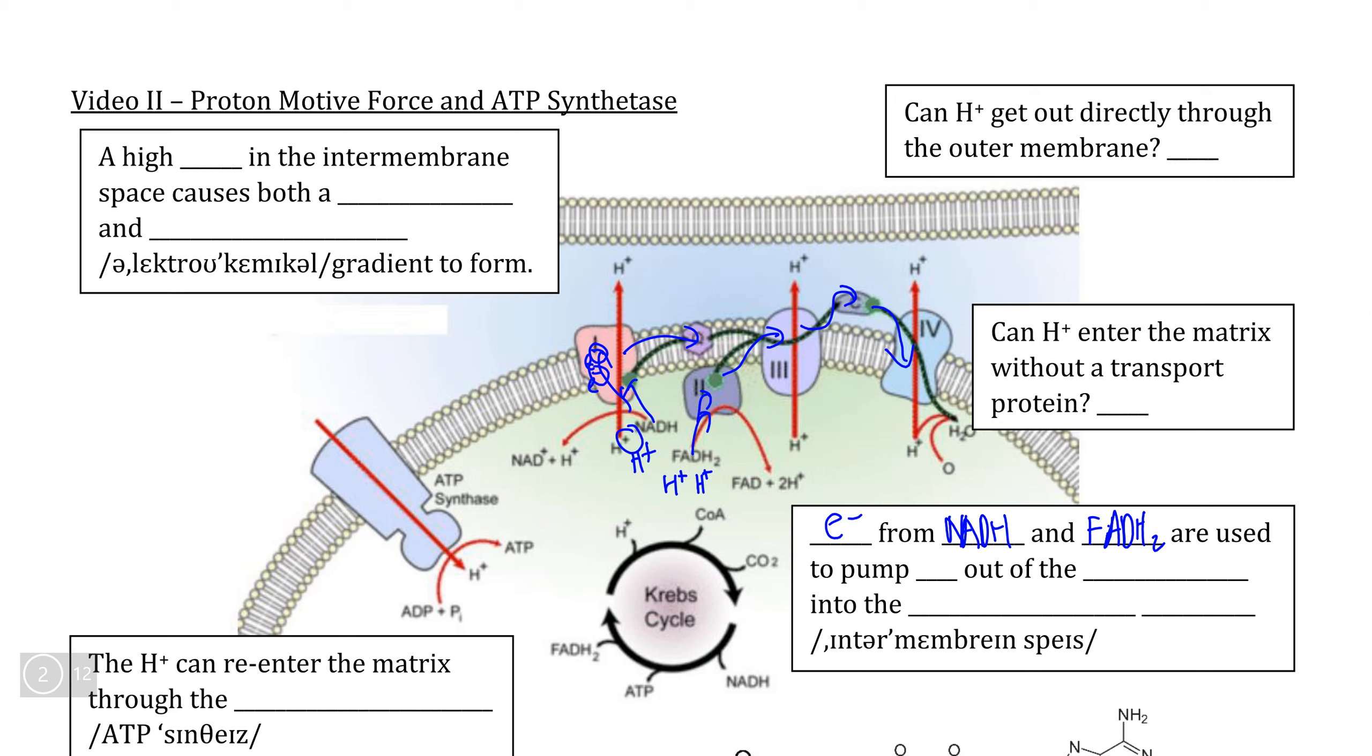This means that every time electrons move through one of the mitochondrial membrane complexes that also acts as a transport protein, the movement of electrons causes H plus ions to be pumped out of the mitochondrial matrix where the Krebs cycle occurs and into the space between the inner and outer membranes.